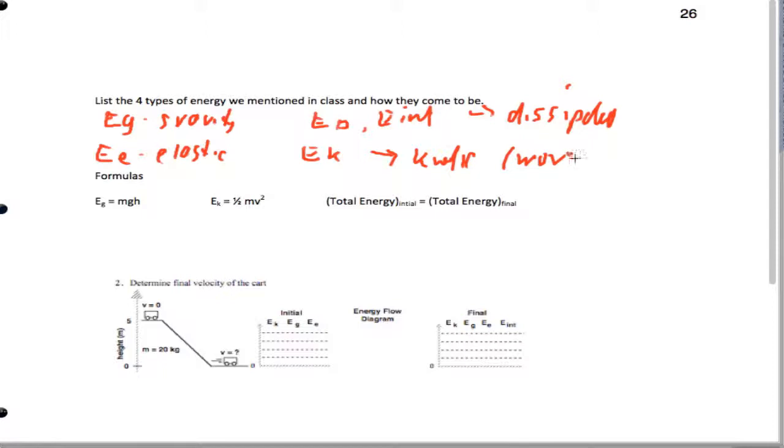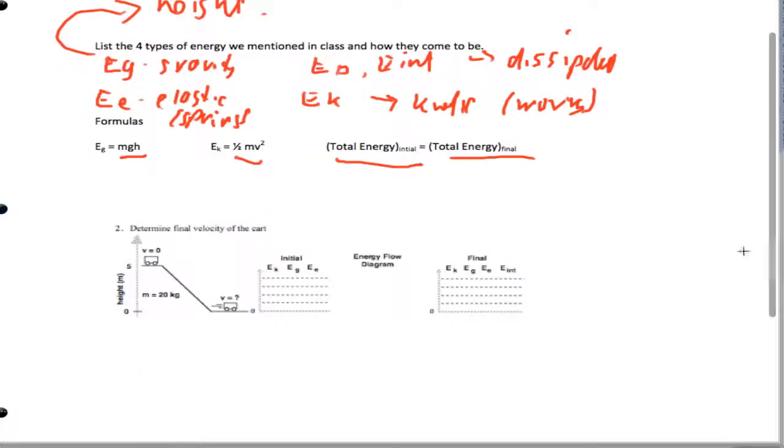Kinetic's moving. Elastic is springs. Gravity is having height and being on a planet. We've got formulas: MGH (mass, gravity, height), and kinetic energy 1/2 mv squared, and the principle we use is total energy before equals total energy after a process.